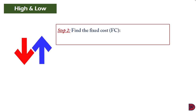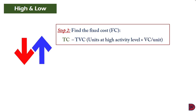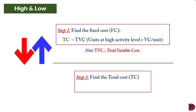Step two: find the fixed cost. We take the total cost at the highest activity level and subtract the total variable cost (TVC). The total variable cost is found by multiplying the units at the highest activity level by the variable cost per unit determined in step one.